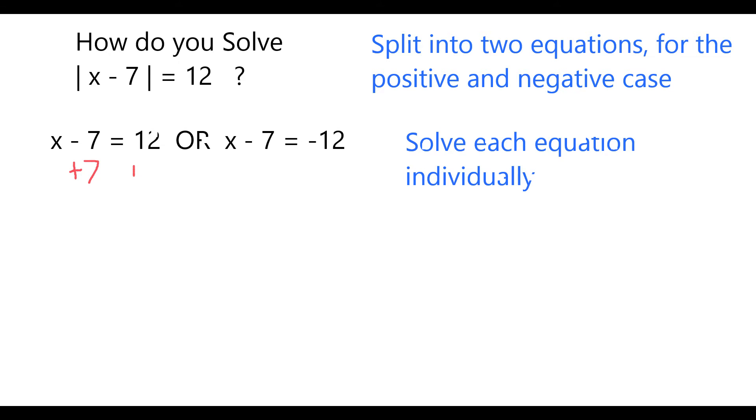Both of these result in simple one-step equations which can be solved by adding 7 to each side. On the first equation, the 7s cancel and one possibility is that x equals 12 plus 7, or 19.